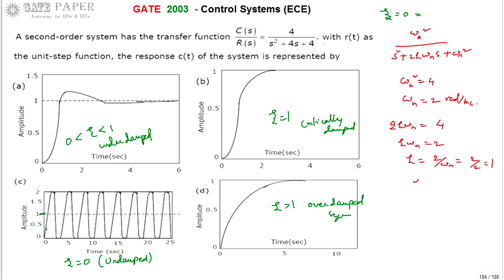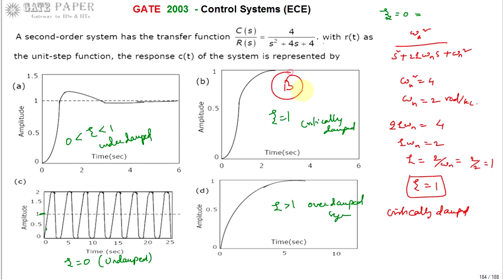Therefore, zeta = 2 / ωn = 2 / 2 = 1. So zeta is equal to one, meaning the given system is a critically damped system. For a critically damped system, the right answer is option B.